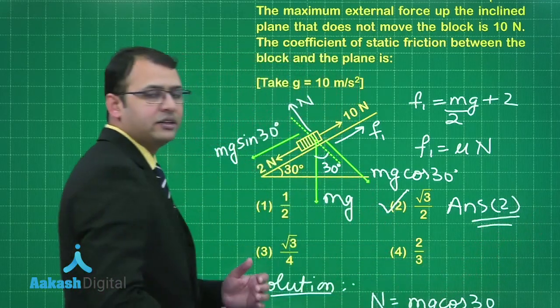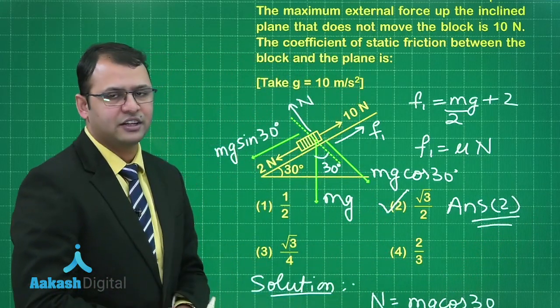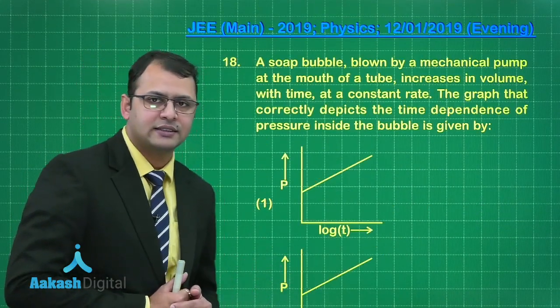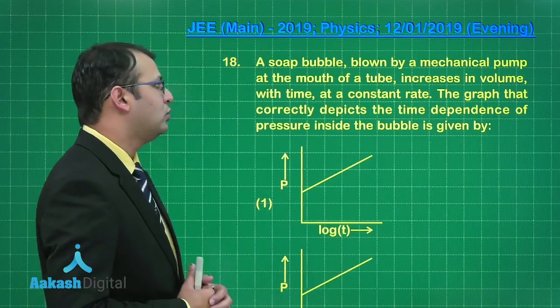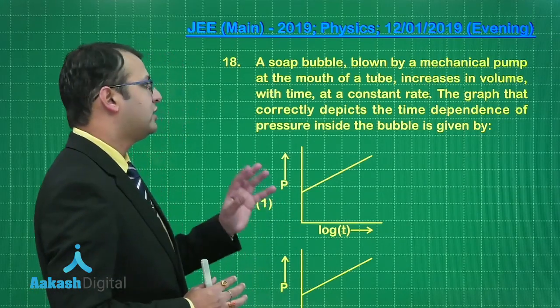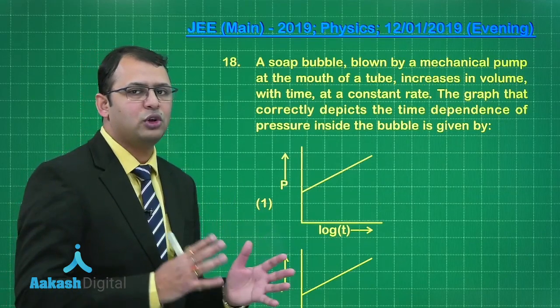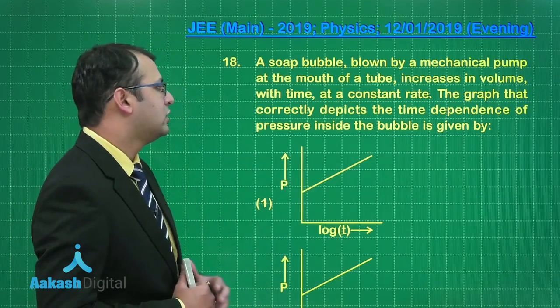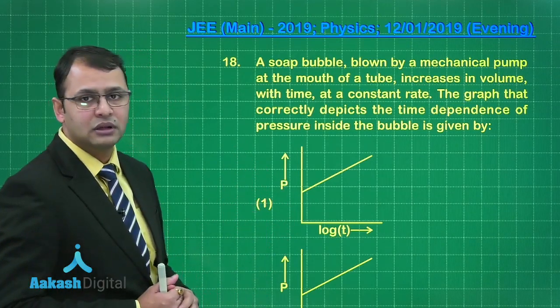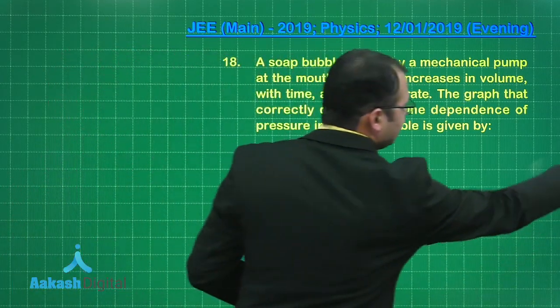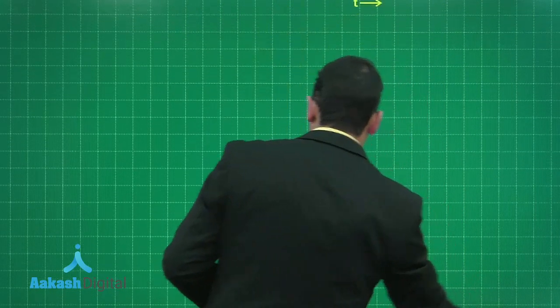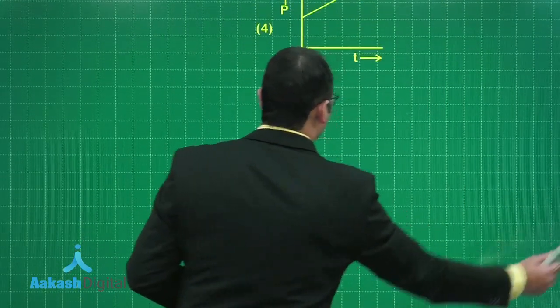Let's move on to our next question. This question belongs to mechanics. A soap bubble blown by a mechanical pump at the mouth of a tube increases in volume with time at a constant rate. The graph that correctly depicts the time dependence of pressure inside the bubble is given. We need a relation between pressure and time.